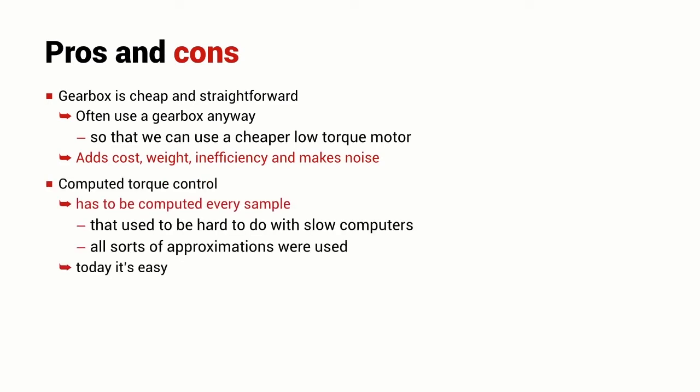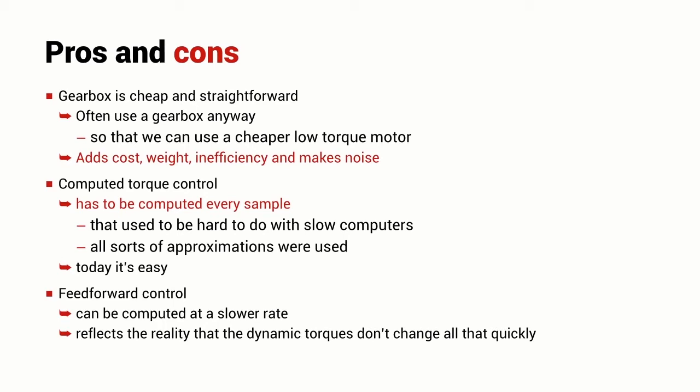Computed torque control has to be computed every single sample. So, if our robot controller is running at say a thousand hertz, then the expression that we had on the previous slide needs to be computed at one thousand hertz. That involves the computation of those matrices, the M, the C and the G matrix and some matrix multiplication. So, a lot of computation needs to be done. Once upon a time, this was really, really hard to do. In the early days of robotics, when computers were really slow, it was a very hard thing. So, all sorts of approximations were introduced. But today, it's very, very easy to do that at a frequency like one thousand hertz.